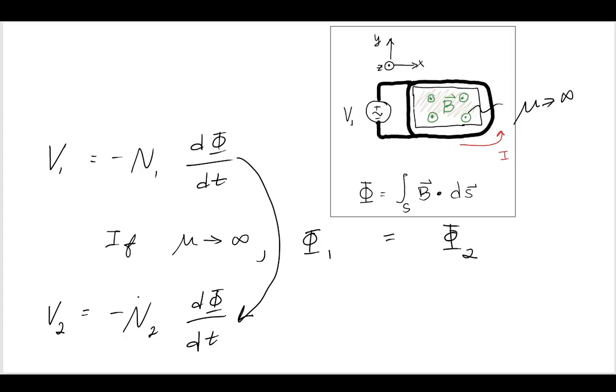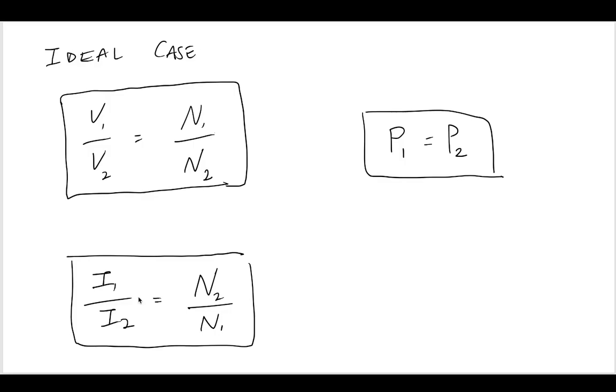Which leads us to relationships that encompass what it means to be a transformer: the voltage in one, the primary voltage, divided by the secondary voltage is exactly equal to the number of windings in the primary divided by the number of windings in the secondary. V1/V2 = N1/N2.